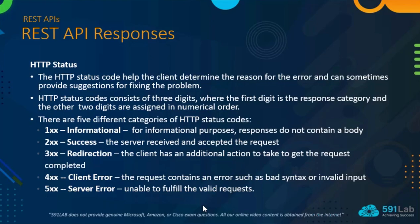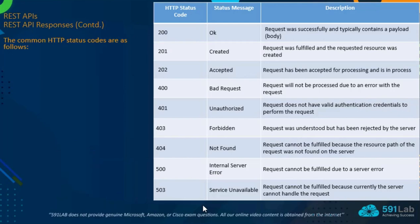These status codes appear after a request is sent and the response indicates whether it was successful or not. For example: 200 means OK, 201 means Created, 202 means Accepted. For errors: 400 is Bad Request, 401 is Unauthorized, 403 is Forbidden, 404 is Not Found, 500 is Internal Server Error, and 503 means Service Unavailable.